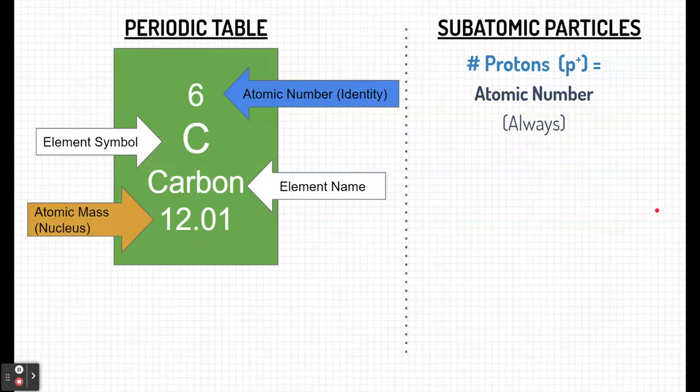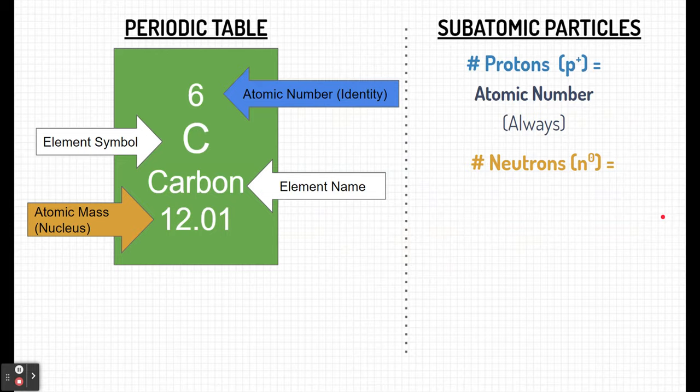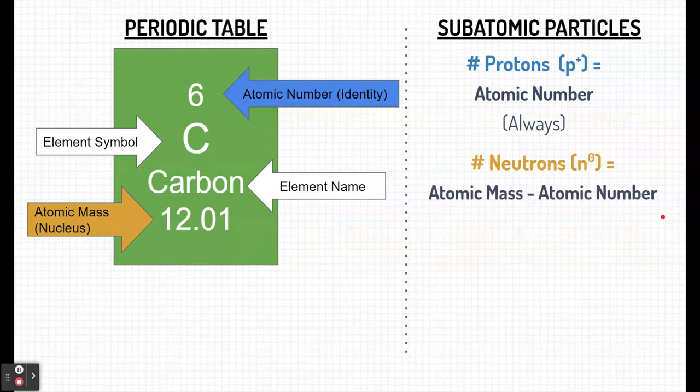The last bit of information here on the bottom is the atomic mass, and this represents the mass of the nucleus. Now the mass you see here is an average of many of the elements of carbon, which we'll talk about later when we talk about isotopes. But the atomic mass can help us determine the number of neutrons. The number of neutrons, remember, along with the protons, are part of an atom's mass. So knowing that, we can figure out how many neutrons an atom has.